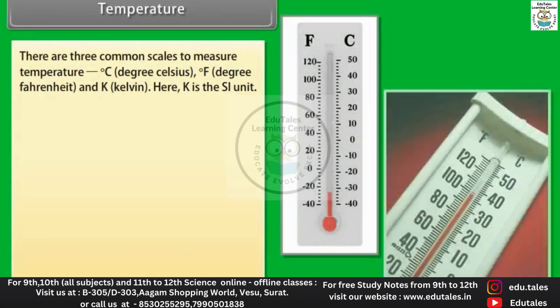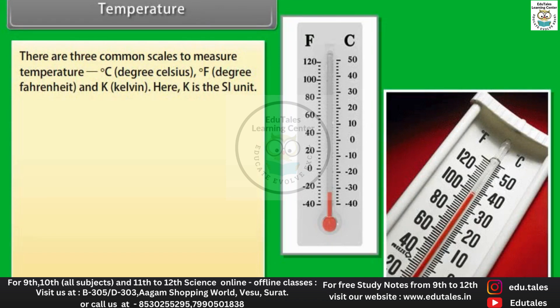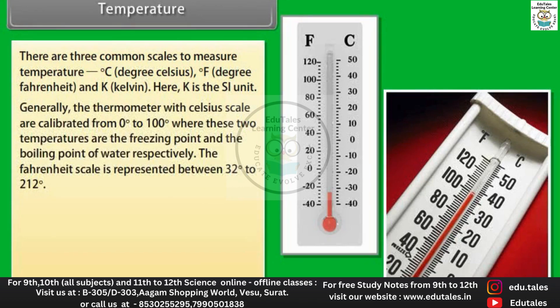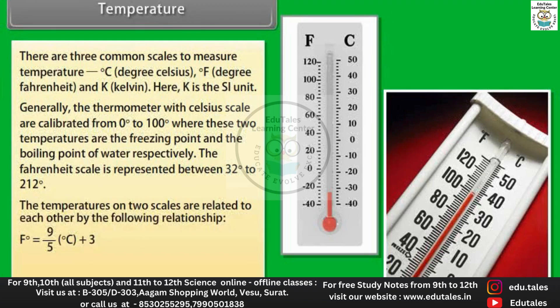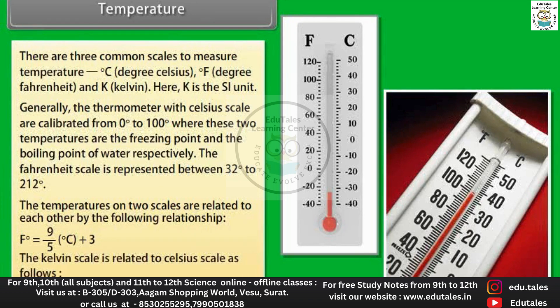There are three common scales to measure temperature: degree Celsius, degree Fahrenheit, and Kelvin. Here K is the SI unit. Generally the thermometer with Celsius scale are calibrated from 0 degree Celsius to 100 degree, whereas these two temperatures are the freezing point and the boiling point of water respectively. The Fahrenheit scale is represented between 32 degrees to 212 degrees. The temperatures on two scales are related to each other by the following relationship: degree Fahrenheit is equal to 9/5 degree Celsius plus 32. The Kelvin scale is related to Celsius scale as follows: Kelvin is equal to degree Celsius plus 273.15.